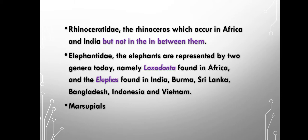After that, the elephant family. Elephants belong to the family Elephantidae and have two genera. The first is Loxodonta and the second is Elephas. Both are elephant genera but present in different parts of the world. Loxodonta is found in Africa, while Elephas is found in India, Burma, Sri Lanka, Bangladesh, Indonesia, and Vietnam. So we can say they are discontinuously distributed. Similarly, marsupials — pouched mammals that carry their young in a pouch — are also discontinuously distributed.